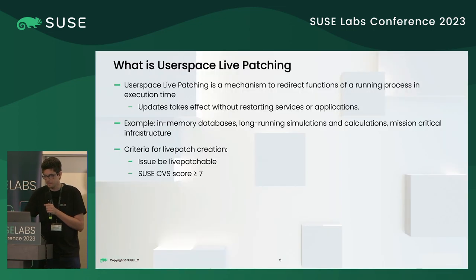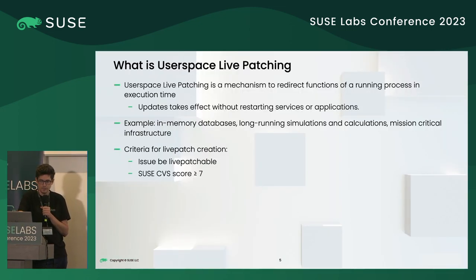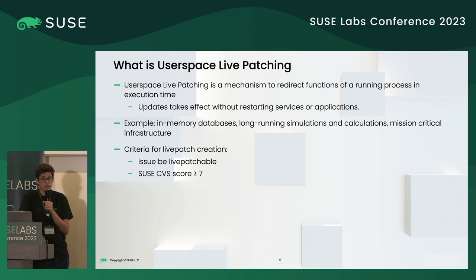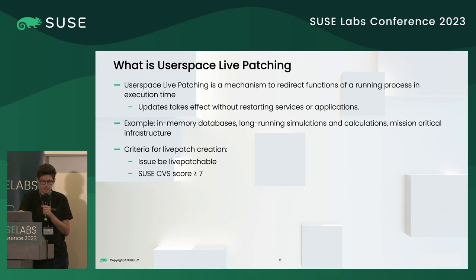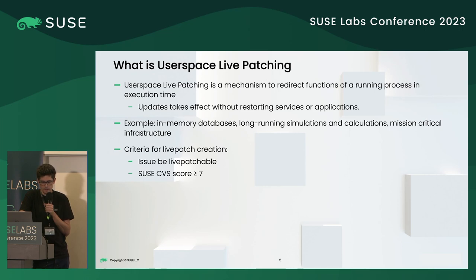So what is userspace livepatching? Userspace livepatching is a mechanism to redirect functions of a running process at execution time. This means that processes that use ULP technology have their updates applied without any need to restart the process. Examples where this is interesting are in-memory databases, long-running simulations, and mission-critical infrastructure — pretty much anywhere where restarting the application would result in a very long cold boot time.